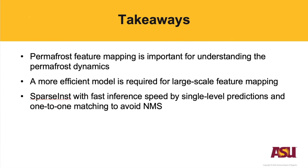Takeaways: In this work, we first introduced that permafrost feature mapping is important for understanding permafrost dynamics and the impacts of global warming. Second, we propose that a more efficient model is required for large-scale feature mapping, and we demonstrate the use of Sparse Inst, which achieves much faster inference speed through single-level prediction and one-to-one matching to avoid non-maximal suppression.